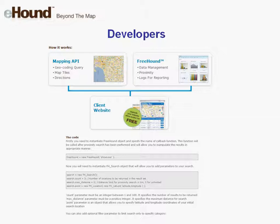The proximity 'where is my nearest' API provides results that can easily be combined with Google Maps API to create your locator quickly. Sign up now for your free API key from our website eHoundplatform.com and get access to the eHound data management tool now.